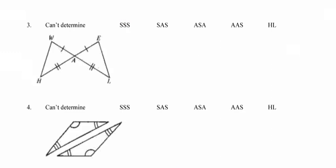Moving on to the next page, we've got two pairs of congruent sides and no other pairs of congruent parts. But we can conclude from the picture that the vertical angles at point A have to be congruent to one another. So looking at this picture, these triangles are congruent by side-angle-side.